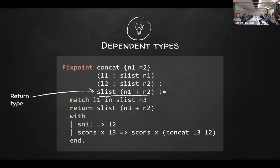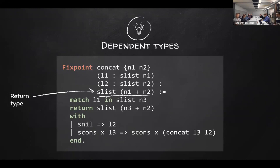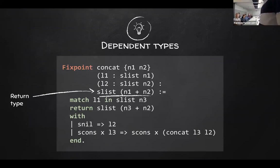Here's a cat (concatenation) function. It takes two lists and combines them. The first list has length n1, the second has length n2, so the concatenation should have length n1 plus n2 — and you can see it does. Pattern matching with dependent types is actually a little bit tricky in some cases. Here I'm giving a pattern for the return type — this pattern has to unify against the actual return type.